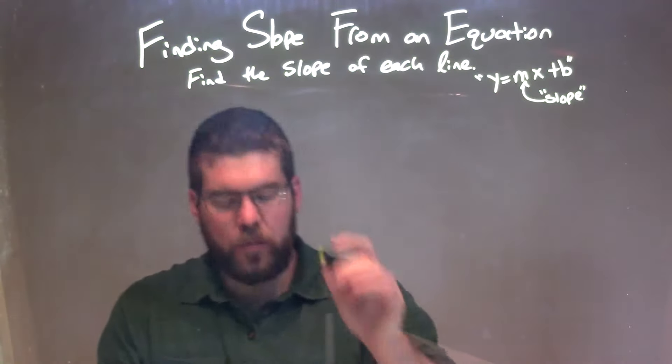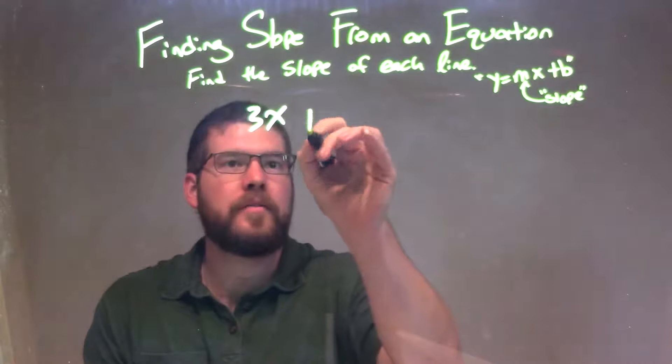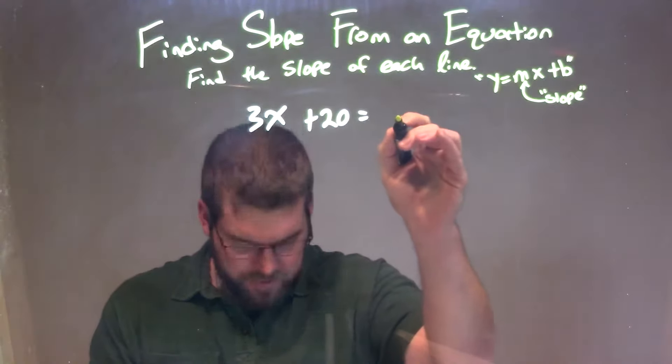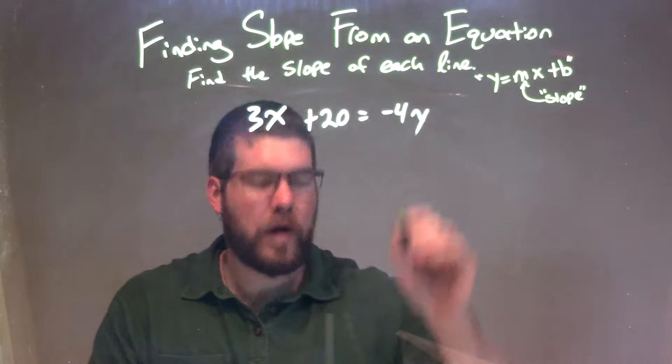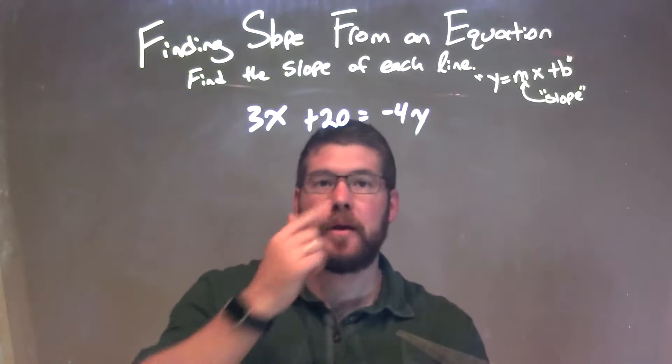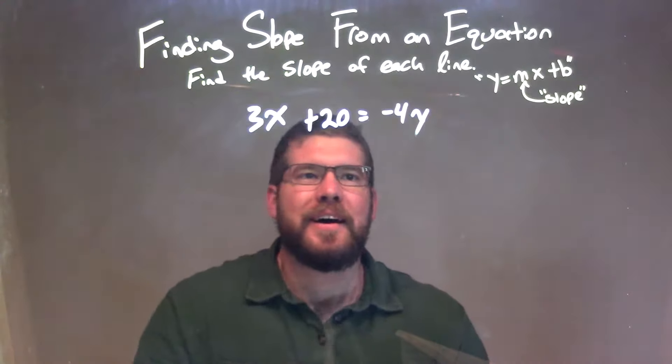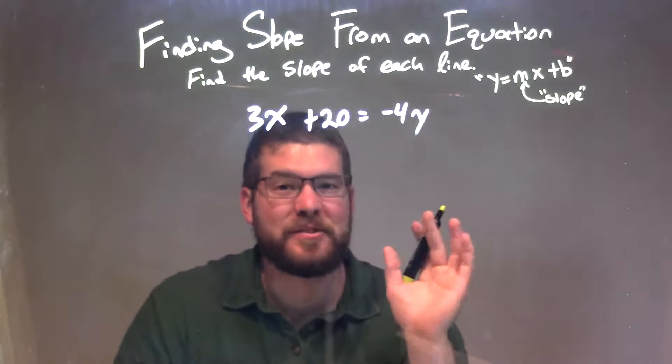So if I was given this equation, 3x plus 20 is equal to negative 4y. Well, we want to isolate y by itself. So it's pretty much almost there, actually. We can see that.